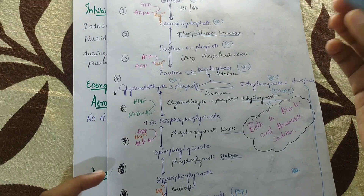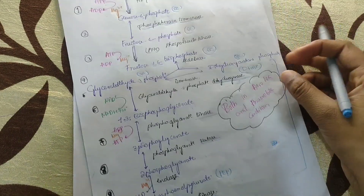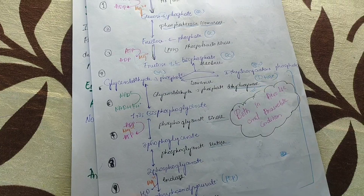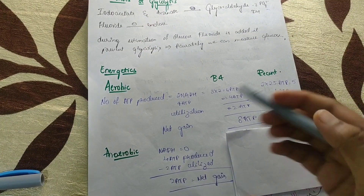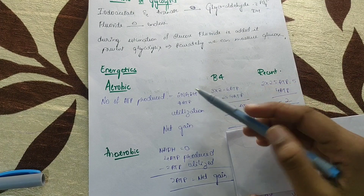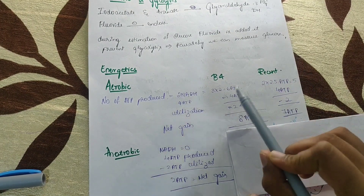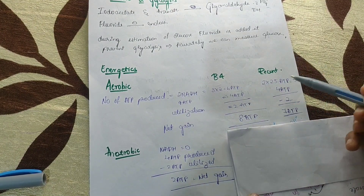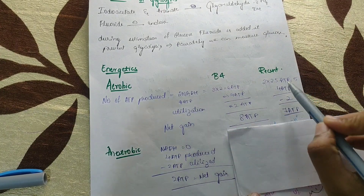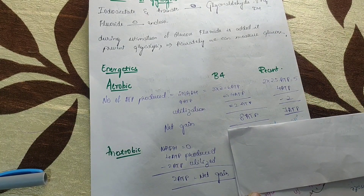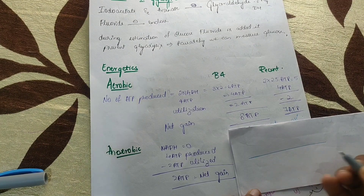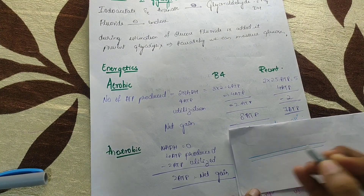In aerobic condition, NADH produced by glycolysis enters the electron transport chain (ETC) in the mitochondria. Before, it was considered that for one NADH, 3 ATPs were produced, but recent findings show that for one NADH only 2.5 ATPs are produced. We will see how this works in the ETC, which takes place in the mitochondria.